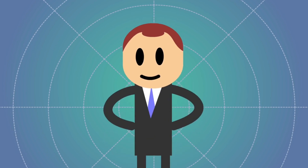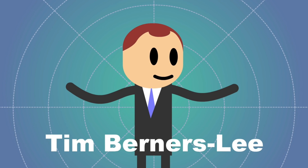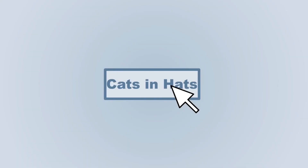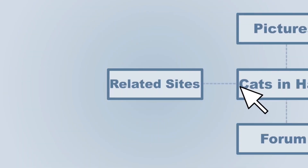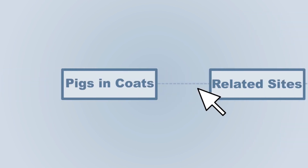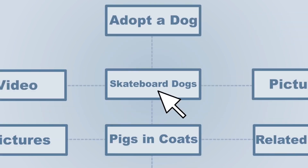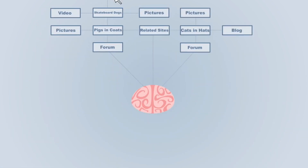Tim Berners-Lee, the father of the World Wide Web, understood that we needed a way to organize information that mirrored this natural arrangement. And the web accomplishes this through hyperlinks. By linking several pages within a website, or even redirecting you to other websites to expand on information or ideas immediately as you encounter them, hyperlinks allow the web to operate along the same lines as our thought patterns.